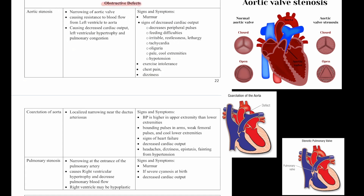Now let's talk about obstructive defects. The first type is aortic stenosis. This is a narrowing of the aortic valve causing resistance to blood flow from the left ventricle to the aorta. It causes decreased cardiac output, left ventricular hypertrophy, and pulmonary congestion. Signs and symptoms are a murmur and signs of decreased cardiac output,